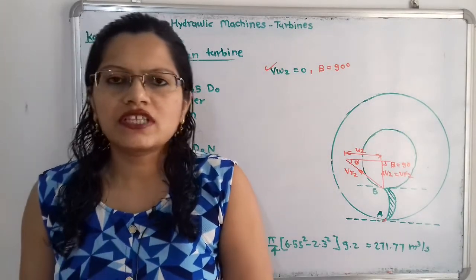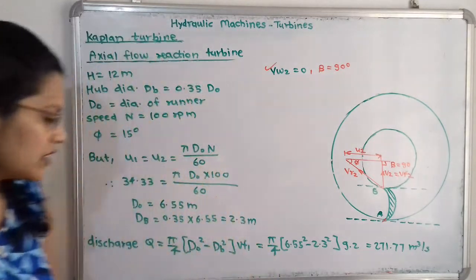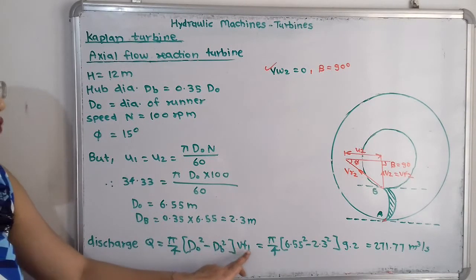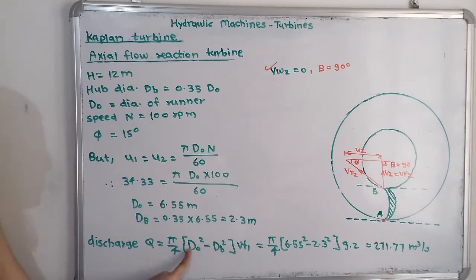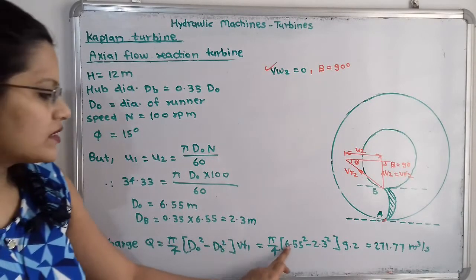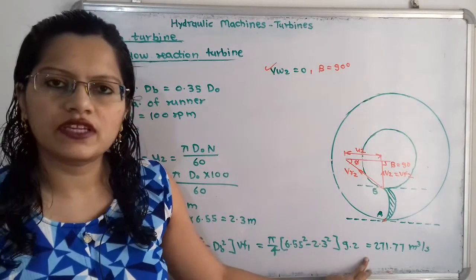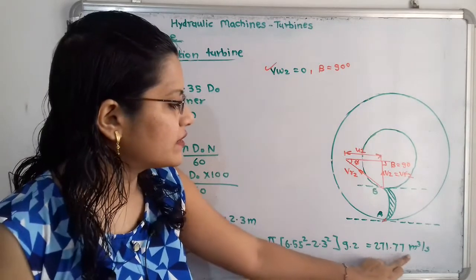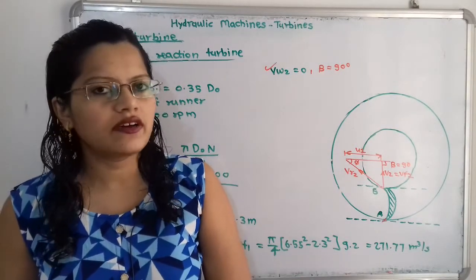Finally, the discharge Q = (π/4) × (Do² - db²) × vf1 = (π/4) × (6.55² - 2.3²) × 9.2 = 271.77 m³/s. This is the final answer.